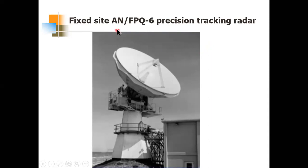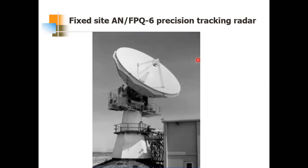The ANFPQ-6 radar system is used for long-range and small target tracking, and it is located at NASA Kennedy Space Center. This radar system first used an embedded programmable computer, and it falls under the category of monopulse tracking radar. There are three methods of tracking we will be discussing in this module.